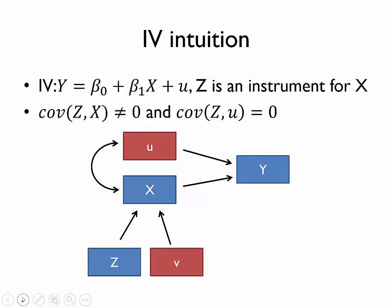Our solution to this problem was to use an instrumental variable, to use z as an instrument for x. The two conditions are: the instrument has to be related to the endogenous independent variable, but it also has to be unrelated with the error term, meaning it has to be exogenous. Let's go back to our car demand example to understand both why these conditions are relevant, but also why the instrumental variables formula works the way it does.